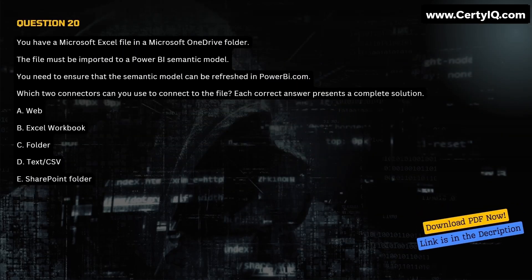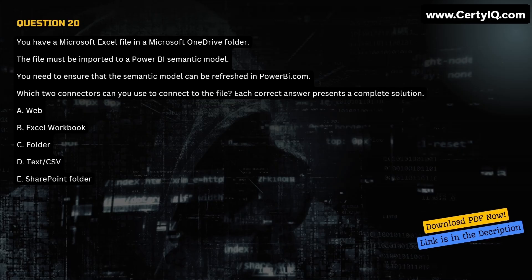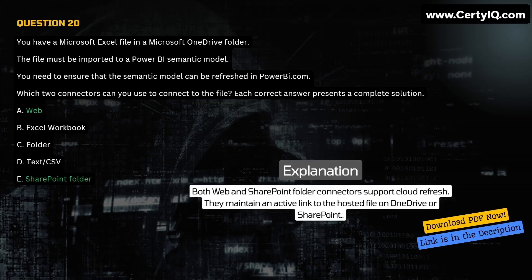Question 20. You have a Microsoft Excel file in a Microsoft OneDrive folder. The file must be imported to a Power BI semantic model. You need to ensure that the semantic model can be refreshed in PowerBI.com. Which two connectors can you use to connect to the file? Each correct answer presents a complete solution. A. Web. B. Excel workbook. C. Folder. D. Text/CSV. E. SharePoint folder. Correct answer is A and E. Explanation: Both Web and SharePoint folder connectors support cloud refresh. They maintain an active link to the hosted file on OneDrive or SharePoint.